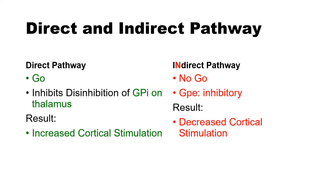What's happening with that patient's arm illustrates the go/no-go signal that we all receive. The direct pathway means go — movement. It involves inhibiting the disinhibition — a double negative — of the globus pallidus internus on the thalamus. The result to remember is increased cortical stimulation. Direct pathway equals go equals movement.